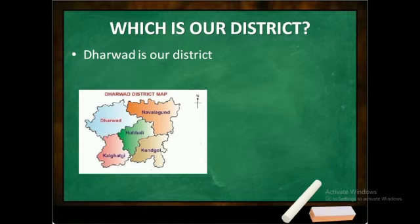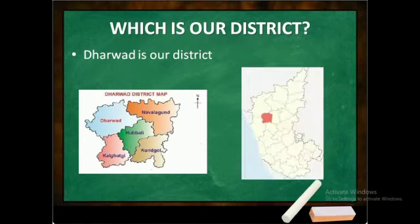Dharwad district consists of different taluks: Dharwad, Navalgund, Hubli, Kalgatgi, and Kundgol. Here on the Karnataka map, you can see the orange color — that is Dharwad district.